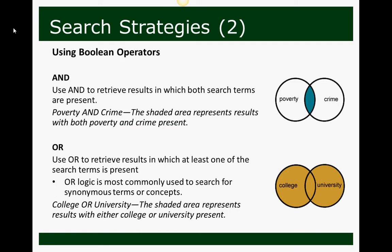The next search strategy is Boolean operators — it's just a fancy word for something that is actually a really good strategy to employ. Boolean operators are AND, OR, and NOT, and they're words you use to connect words or search phrases within databases. If you use AND between two words — so 'poverty AND crime' — it retrieves results in which both search terms are present, tending to give you fewer results. The shaded area of the Venn diagram represents the results you would pull back using the AND Boolean operator.